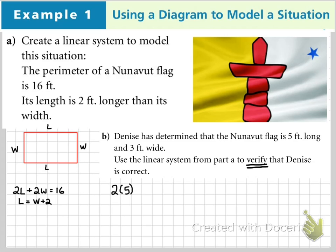So, we're going to take 5 and plug it in for length, 2 times 5, plus 3 in the width, 2 times 3, and is that 16? 10 plus 6 is 16, and 5 is equal to 5 if you plug these into both sides. There you have it. It does verify.